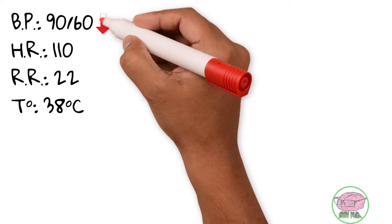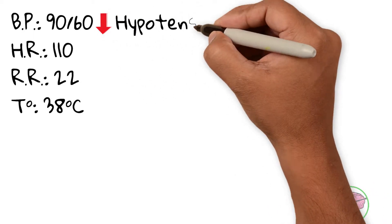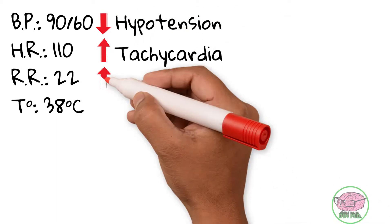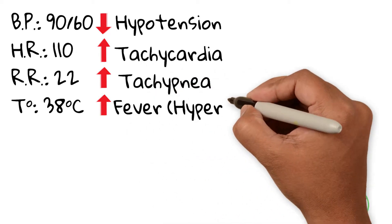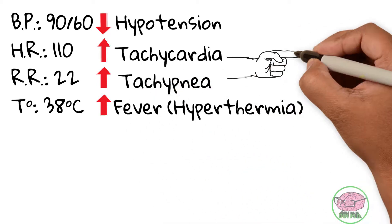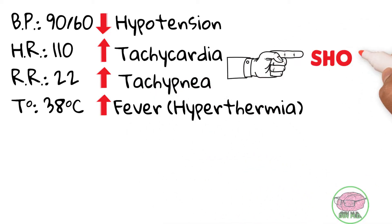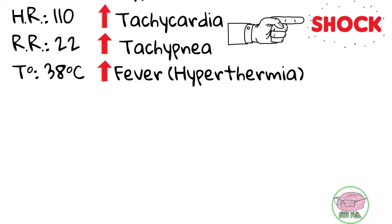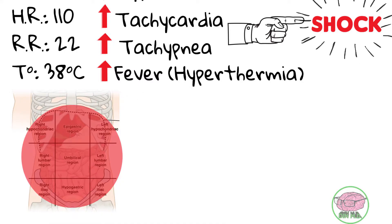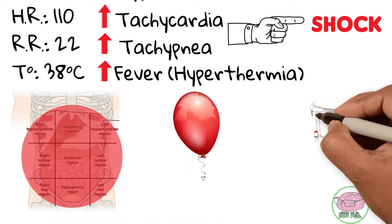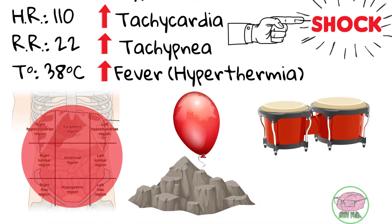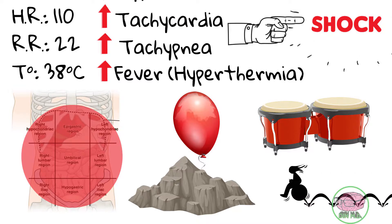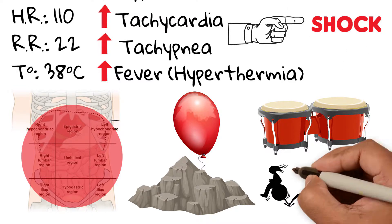This translates as hypotension, tachycardia, tachypnea, and fever — all signs of shock. In the physical examination he also has abdominal pain, distension, tympanism on percussion, rigidity, and a positive Blumberg sign.